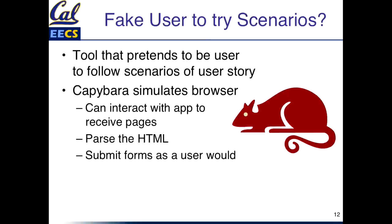The other part of the question is who's going to push the buttons — and that is a tool called Capybara. Capybara is probably an animal nobody in the class knows — Armando says it's the world's biggest rat, the size of a dog. That's because the prior tool was called WebRat, so this was even bigger — big rat, Capybara. It interacts with the app to receive pages, parses the HTML, and submits the forms, just the things we were talking about.